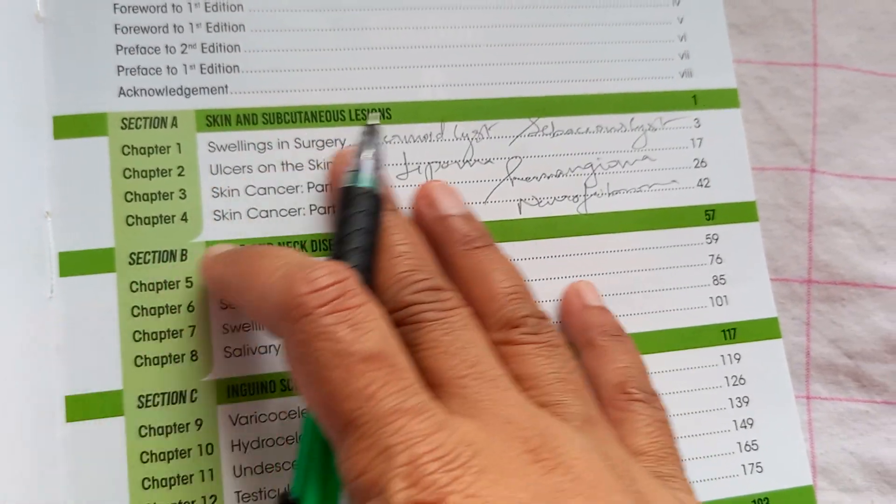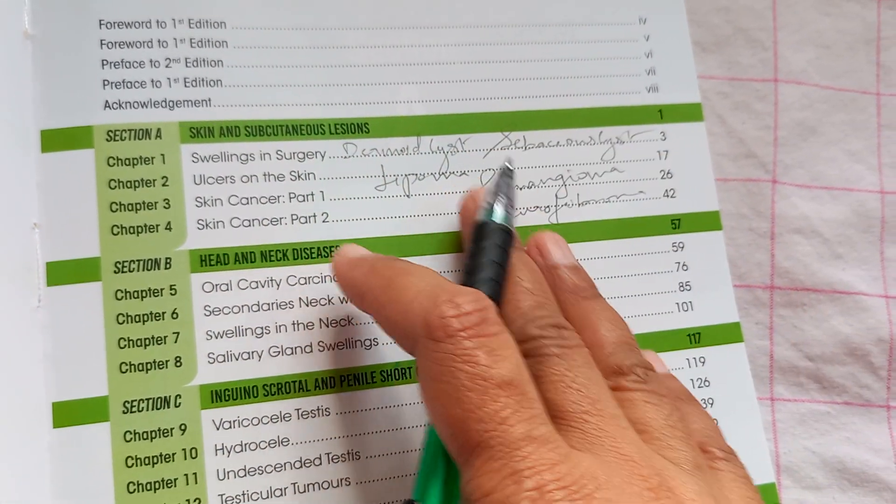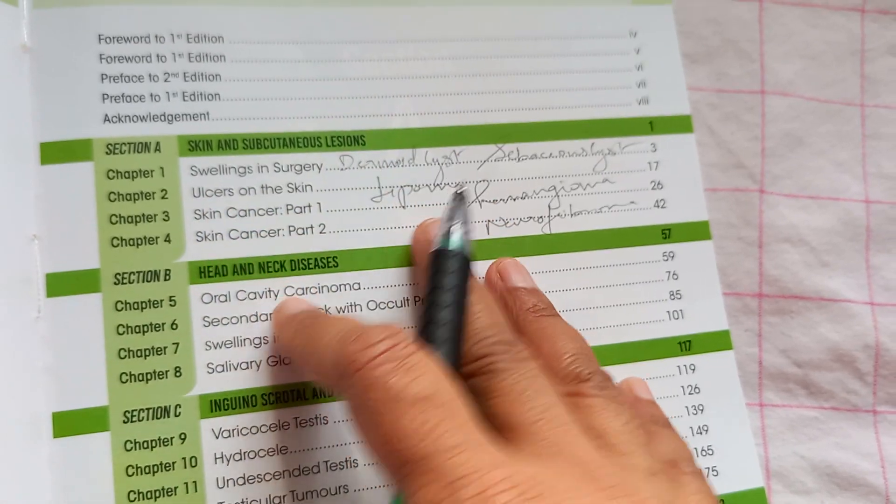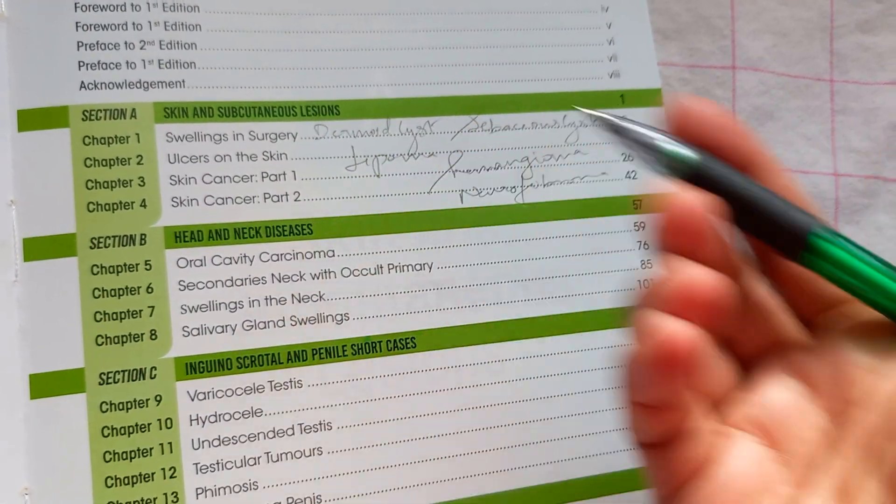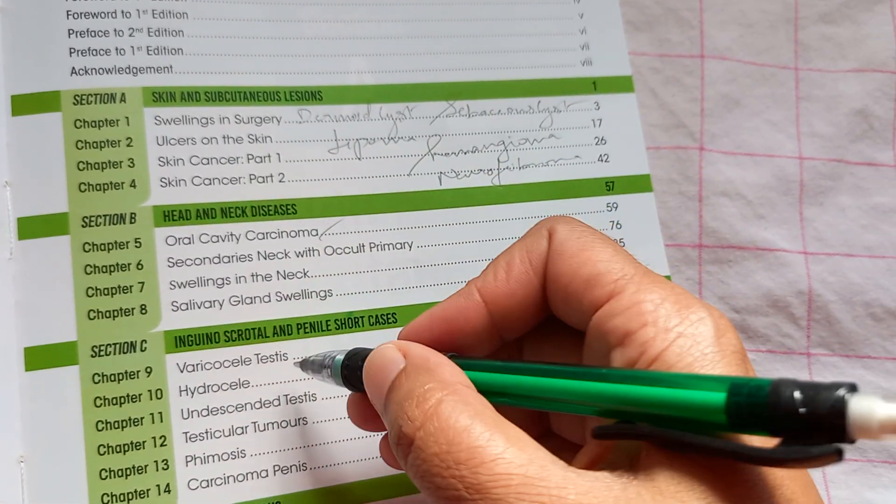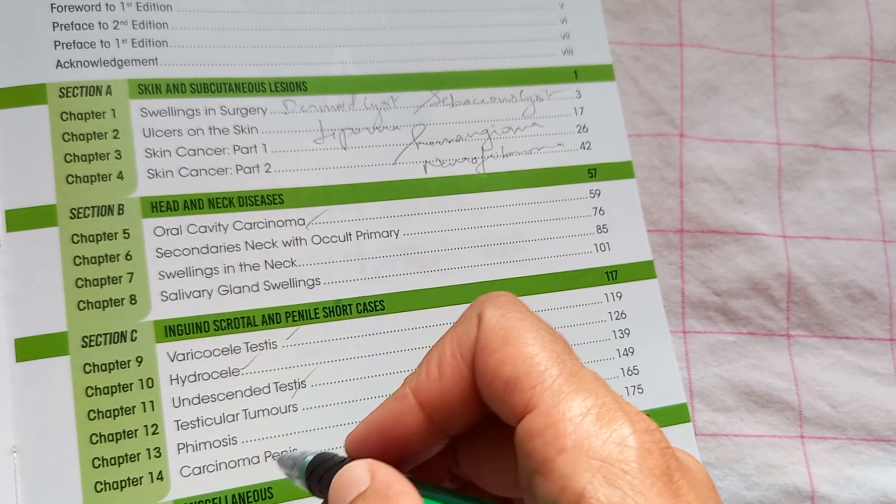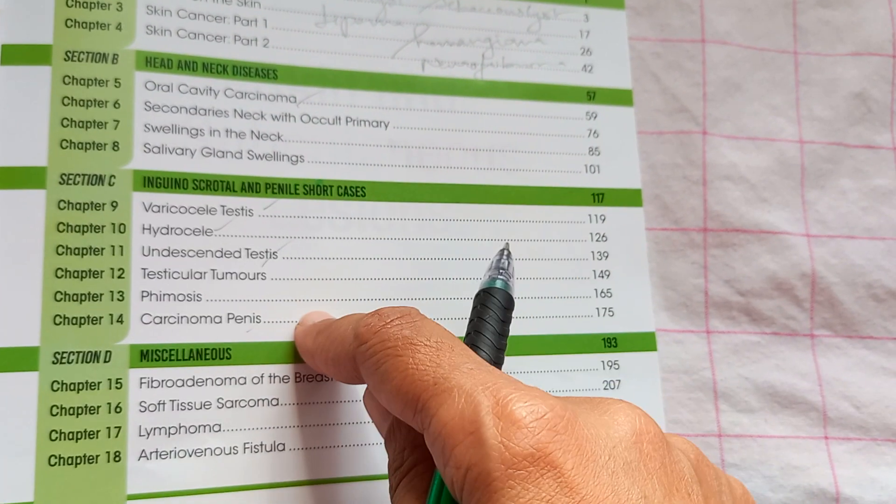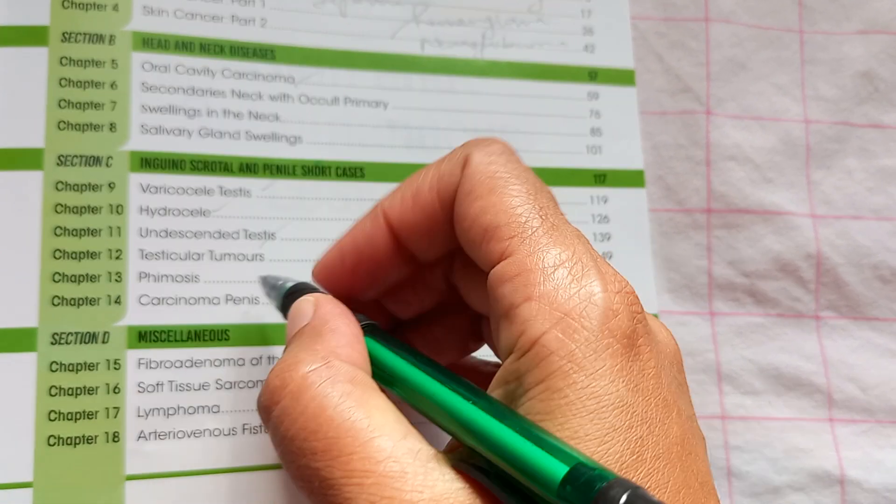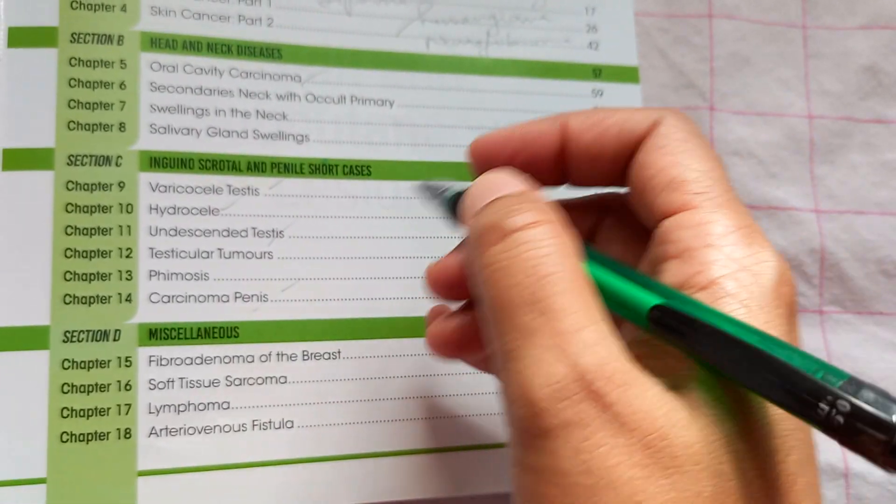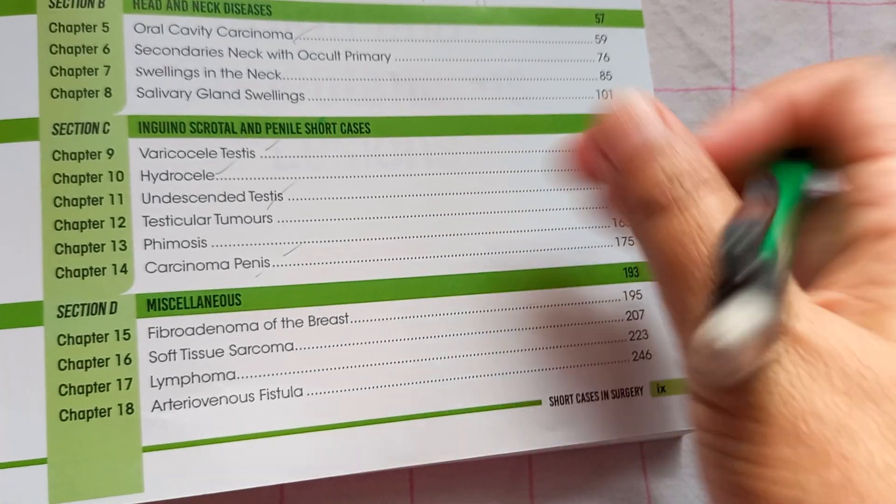See, basically, swellings, you know, like dermoids, sebaceous cyst, lipoma, hemangioma, neurofibroma, all those things can come here. Then, oral cavity carcinoma, they are talking about. Then, varicocele of testes, hydrocele, undescended testes, testicular tumor, carcinoma penis. I think they do not keep all this in the exam though. Especially, I never saw carcinoma penis being kept.